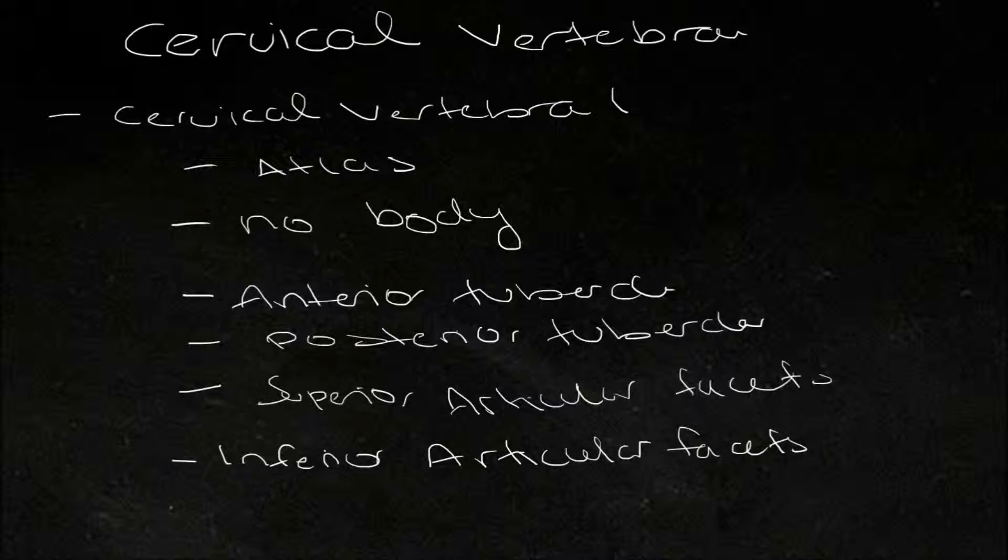There is a third facet for the articulation with the dens, and this is found on the interior surface of the anterior arch of cervical vertebra 1.